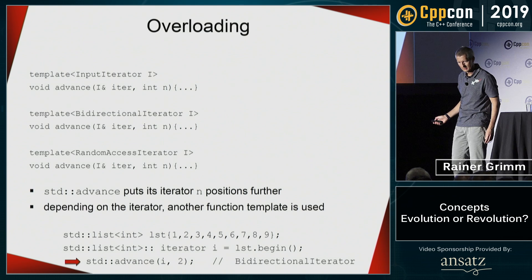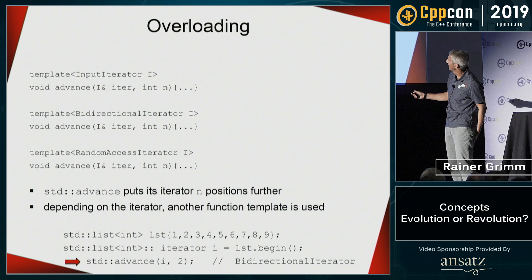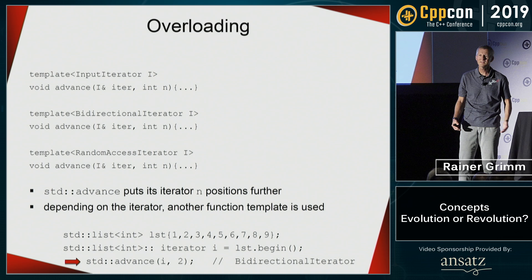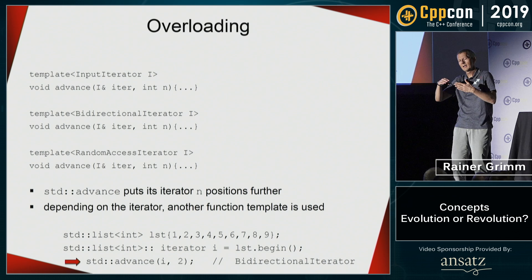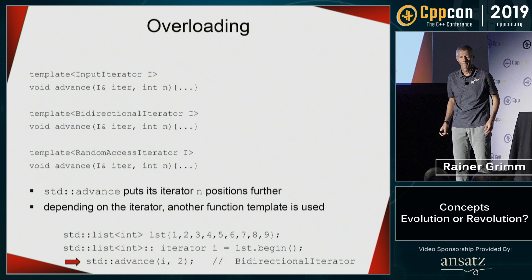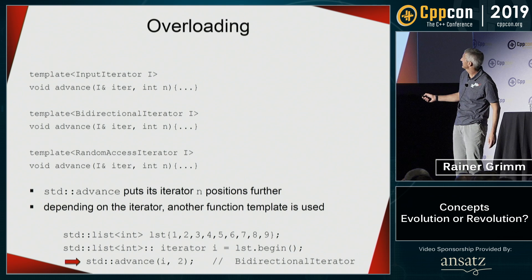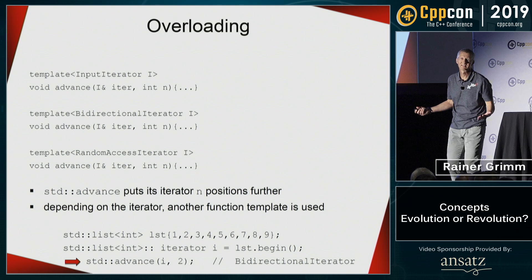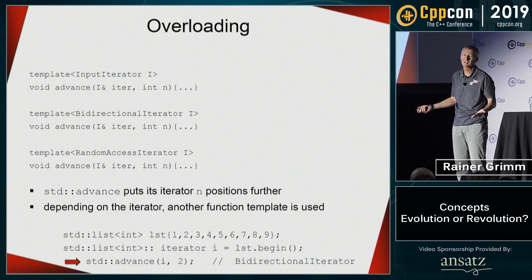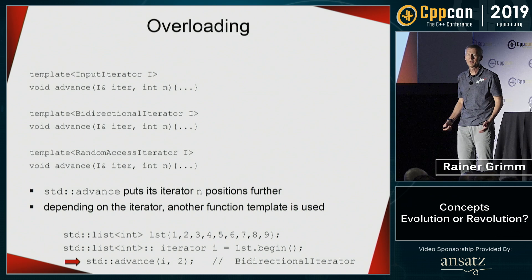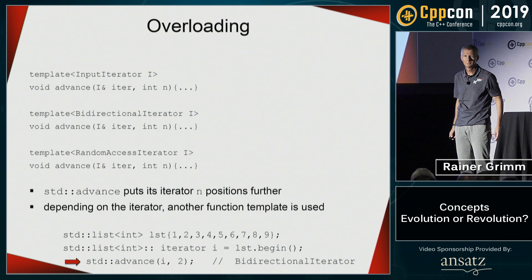You can also overload on concepts. Take the STL algorithm std::advance, which takes an iterator and a number and advances the iterator by that amount. I have implementations for input iterator, bidirectional iterator, and random access iterator. When used with a list — which supports a bidirectional iterator — that version is chosen because it's faster. And when used with a forward list — which only supports a forward iterator — that version is chosen. Quite intuitive.